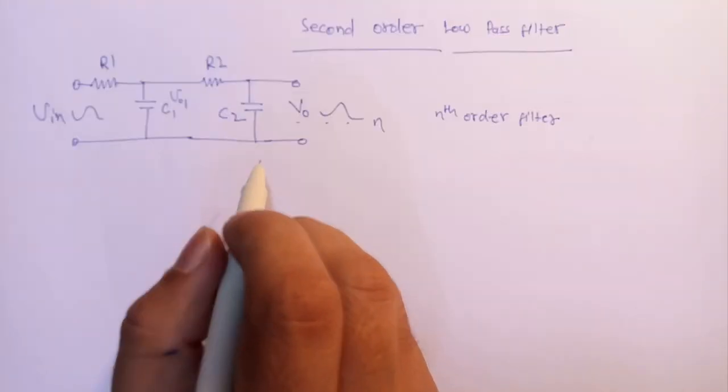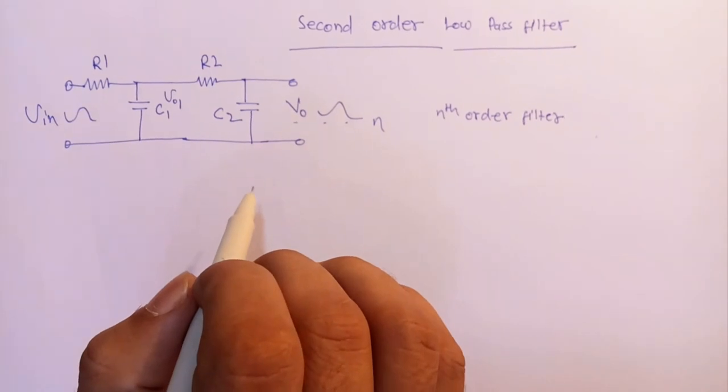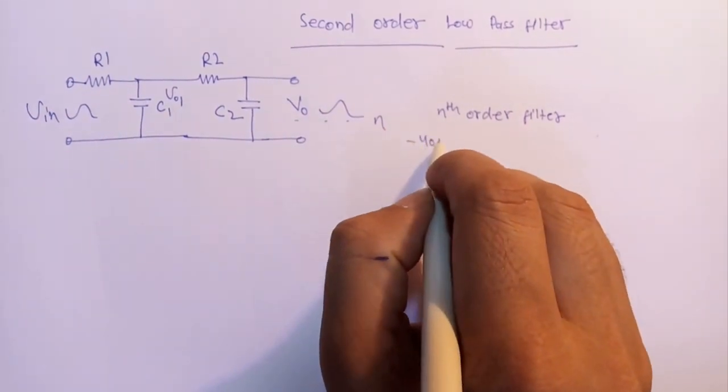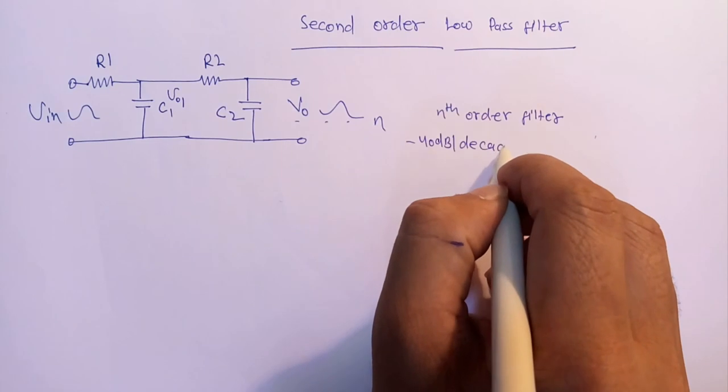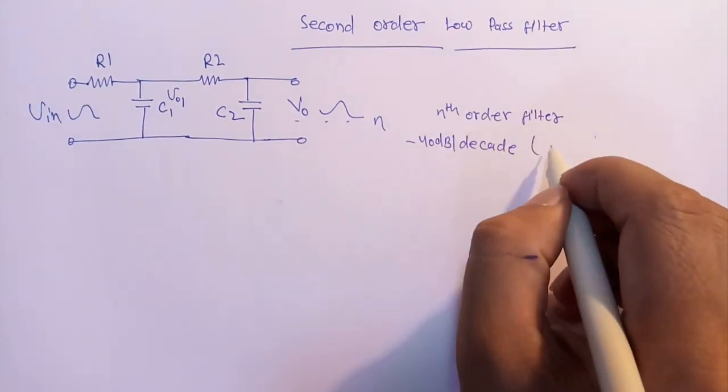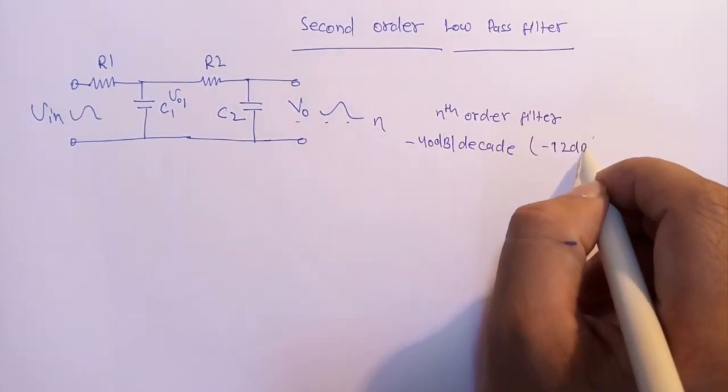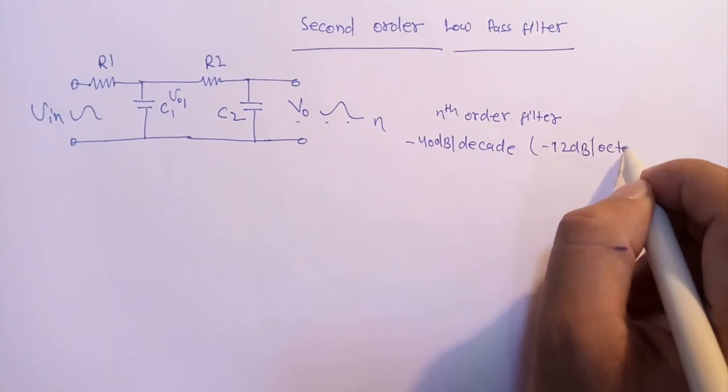For example, a second order filter would have a slope of -40 dB per decade or -12 dB per octave.